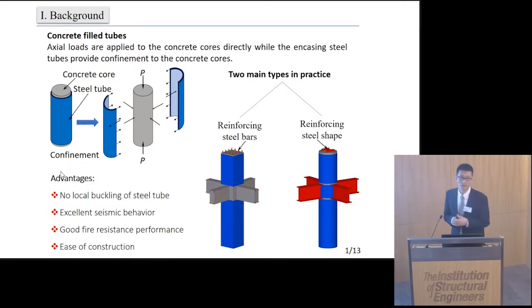On one hand, the steel tube can be used as formwork for concrete pouring during construction. On the other hand, due to the disconnection of the steel tube, the construction of the beam-to-column joints is simplified, especially when connected with RC beams.